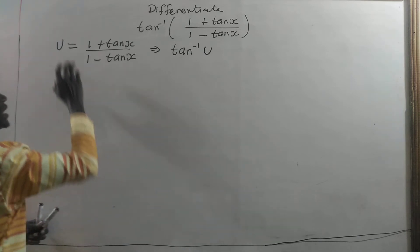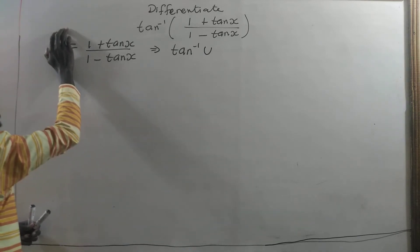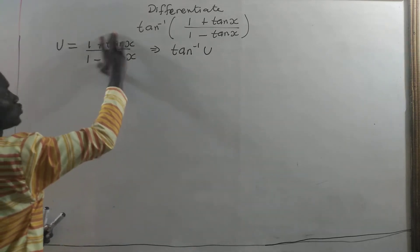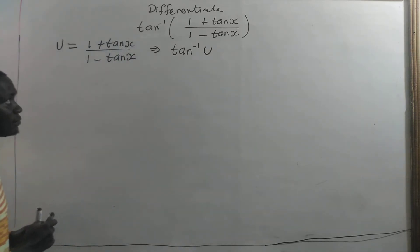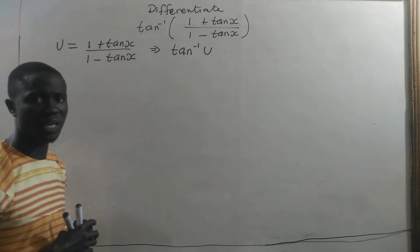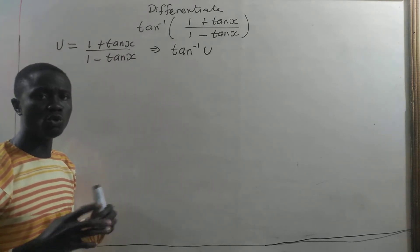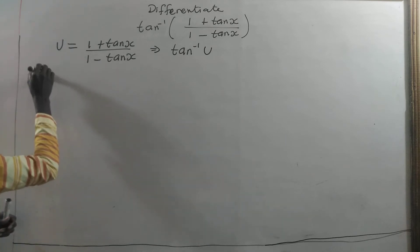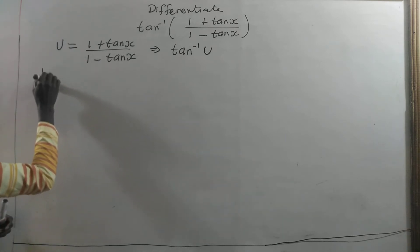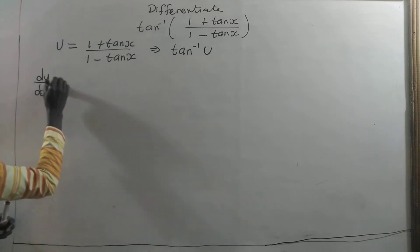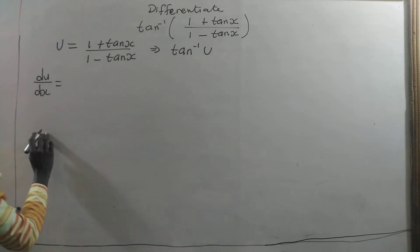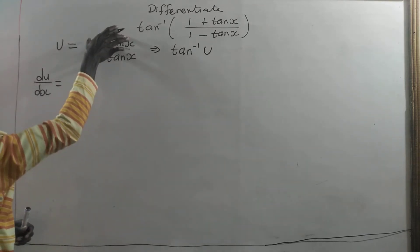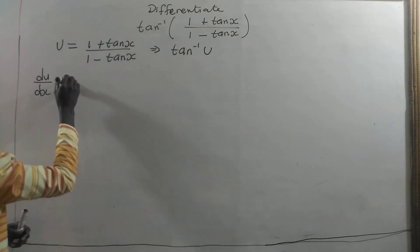Now let us find the derivative of u with respect to x. In finding the derivative of u with respect to x, we will use the quotient rule. The derivative of u with respect to x will be equal to: we differentiate the numerator and multiply by the denominator.